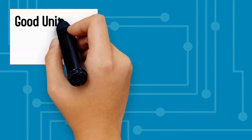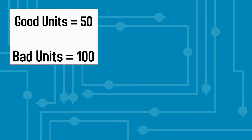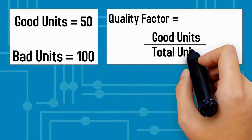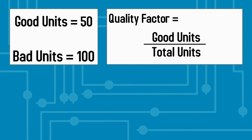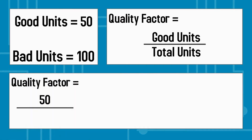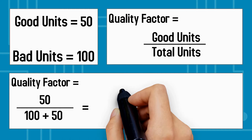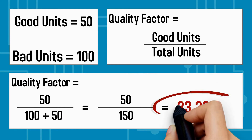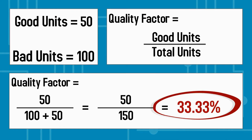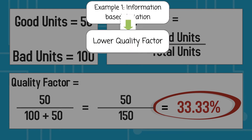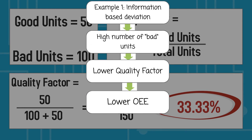In this example, 50 good units and 100 bad units were produced. The quality factor is calculated by dividing the number of good units by the number of total units, which is the sum of good and bad units. Plugging in the data, the numerator is 50 and the denominator is 150. Dividing the two numbers returns a quality factor of 33.33%. This deviation, caused by inadequate information, led to a higher number of bad units, lowering the quality factor and resulting in low overall equipment effectiveness.